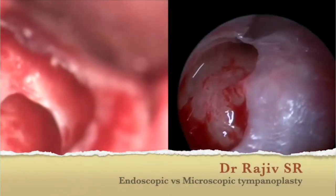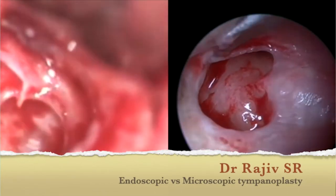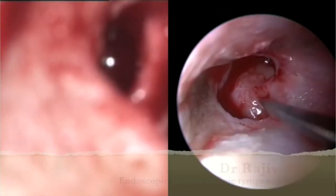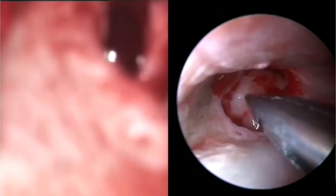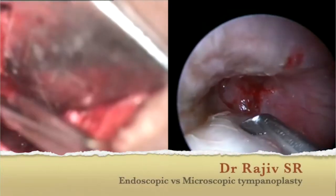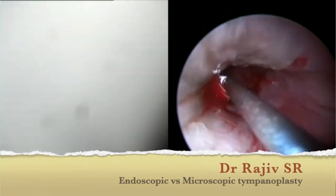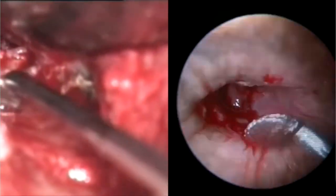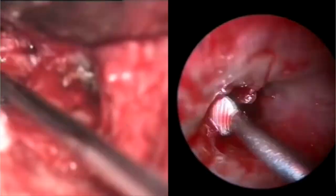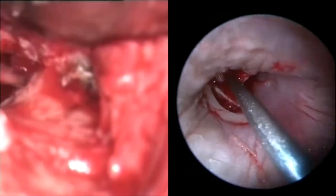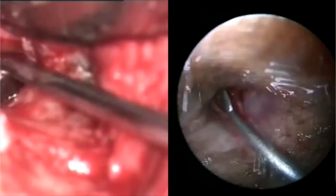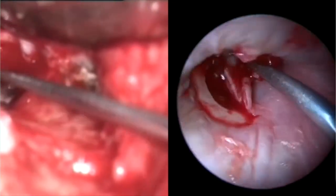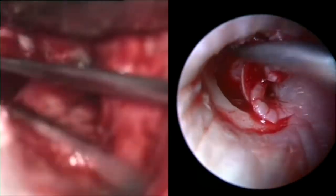The view in the endoscopic picture is much better — a 360-degree view — and we can go closer or move away from the site of surgery to get a three-dimensional feel, whereas in microscopic surgery the field of view is quite limited. After taking the incision in the canal, in both procedures we elevate the skin and periosteum of the canal. After lifting away the flap of skin of the external auditory canal and the tympanic membrane, if there is any disease in the middle ear it is cleared out by the surgeon.